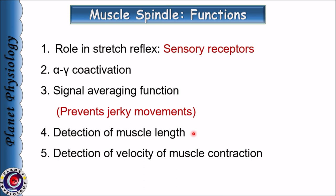The fourth function is detection of muscle length. Muscle spindles constantly transmit signals regarding the length of the muscle even at rest. They also detect changes in the muscle length throughout contraction as well as relaxation, and this helps in adjusting the muscle length during voluntary activities. The fifth function is detection of the velocity of muscle contraction — the muscle spindle detects the speed at which the muscle is being stretched or contracting, and again primary afferents play an important role in this function.